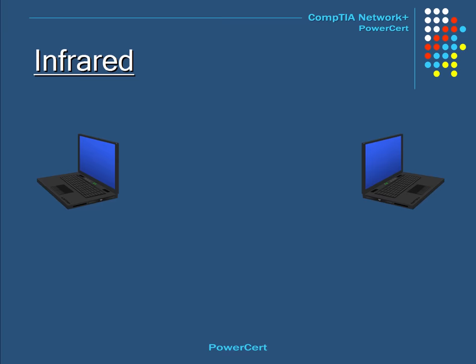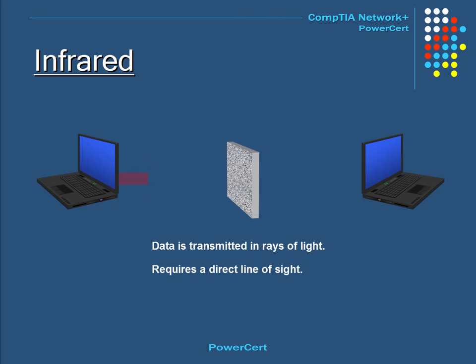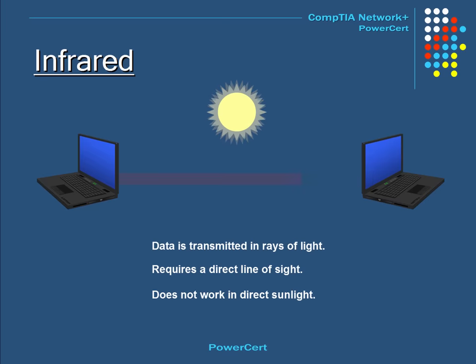Infrared is a technology developed by IRDA, the Infrared Data Association. The term infrared means below-red. It is a wireless technology where data is transmitted in rays of light rather than using radio waves. Many companies have utilized this technology in their products. However, the drawbacks of infrared are that it requires a direct line of sight — if any object comes between the two infrared devices, communication will be blocked. Infrared also does not work in direct sunlight.